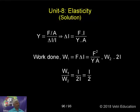Work done is force into displacement, that is F into delta L. Therefore, F squared by YA. Work done for wire 2 is equal to 2L. Therefore, W1 by W2 is equal to L by 2L. That is equal to half.